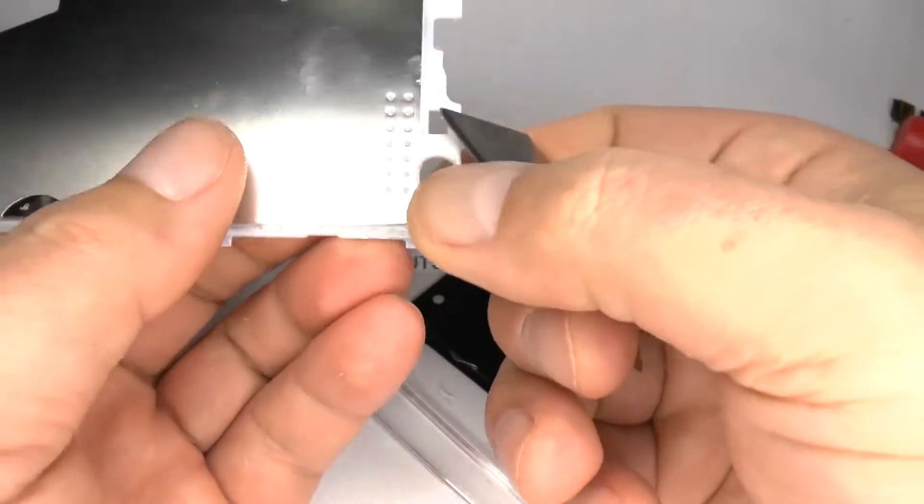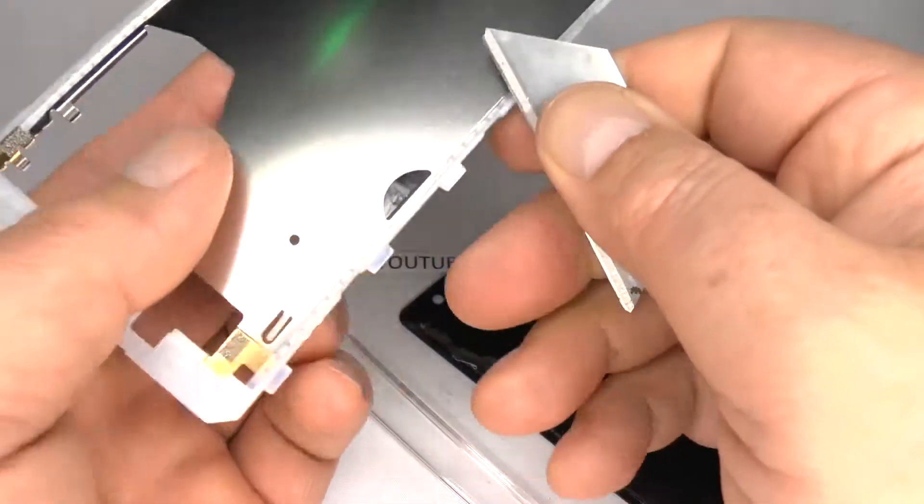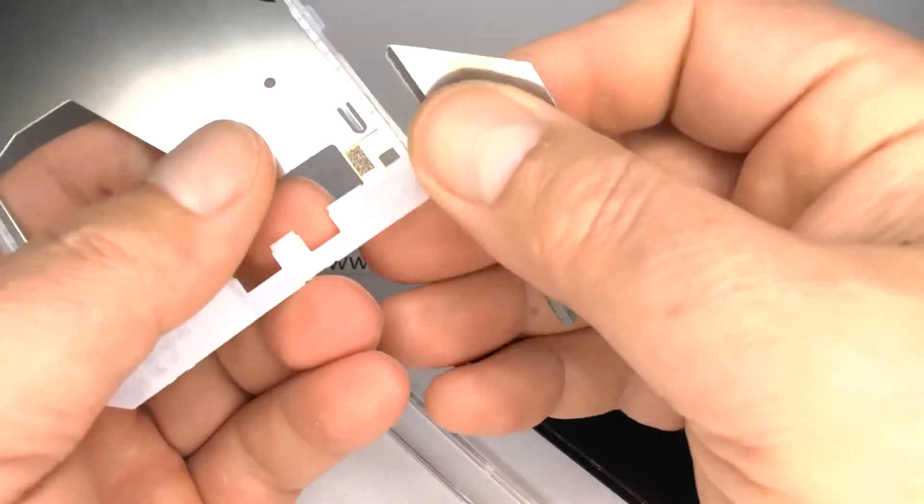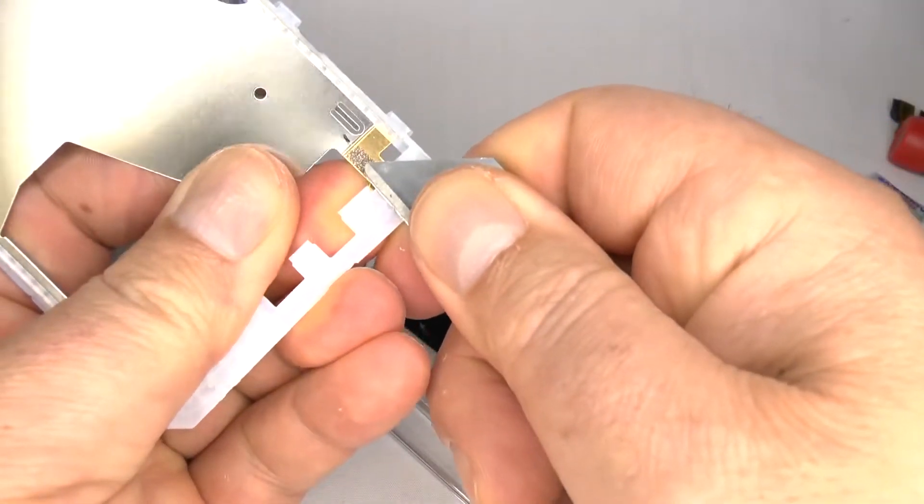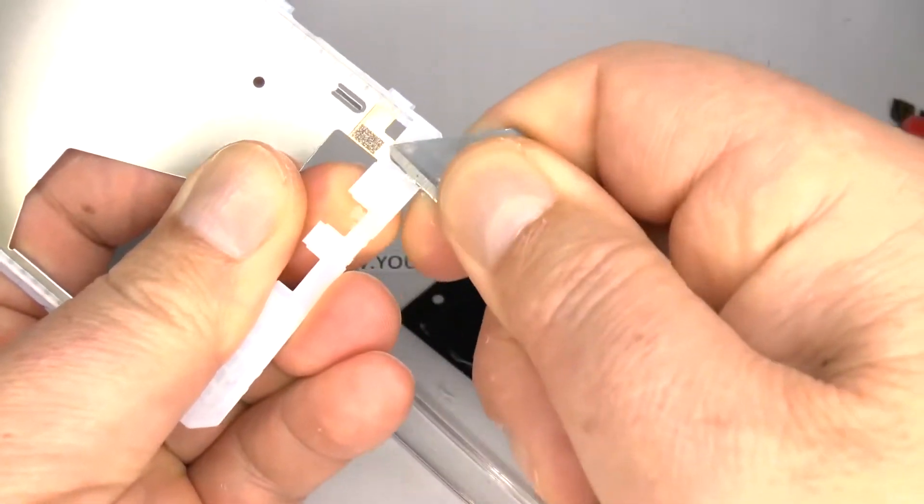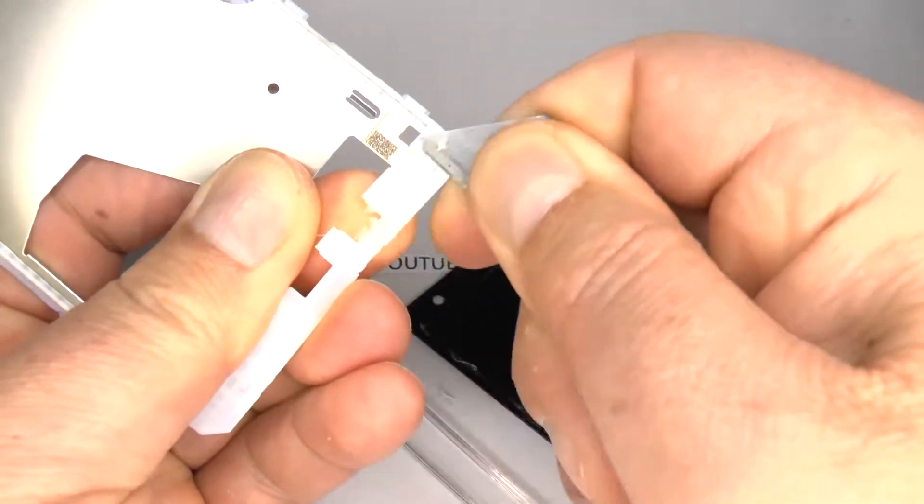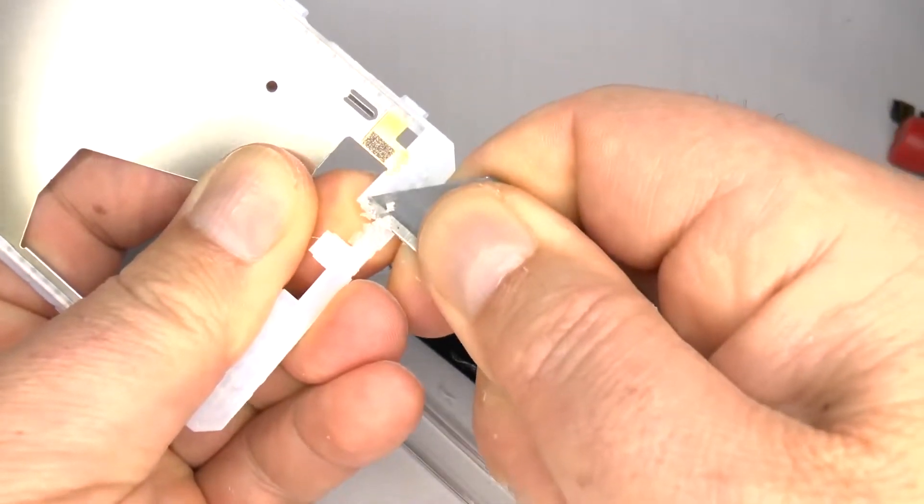Again, you could use some heat to soften this adhesive, make it a bit easier to remove. Keep going around the edges, removing as much of the adhesive as you can.